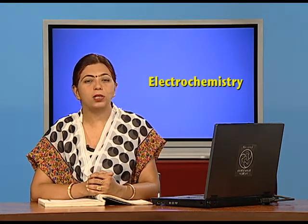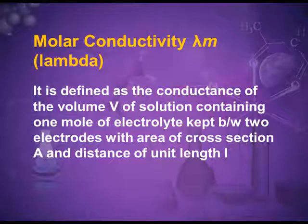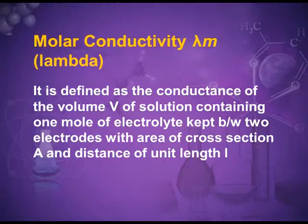The next topic of this unit is molar conductance. If we take one mole of the electrolyte, the ions produced by this one mole of electrolyte offer conductance — this conductance is molar conductance. It is defined as the conductance of the volume V of the solution containing one mole of the electrolyte, kept between two electrodes with area of cross section A and distance of unit length L.